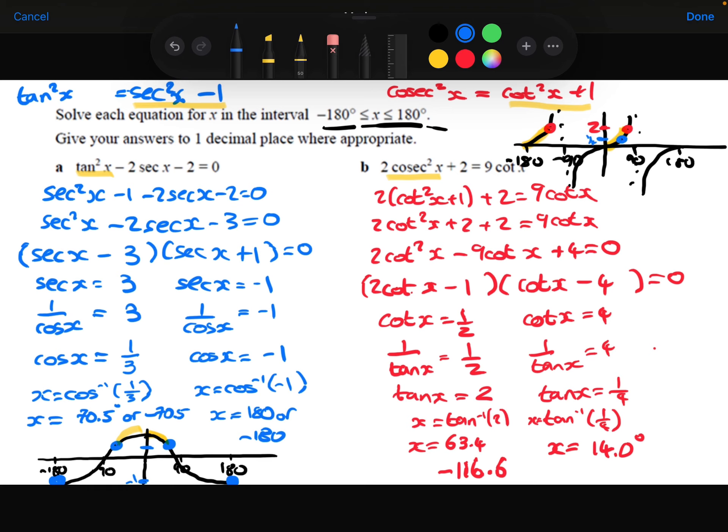There's one solution there, another solution there. We know that this is 14, so this here is going to be 14 as well. So minus 180 plus the 14 is minus 166. And those are the four solutions to part B.